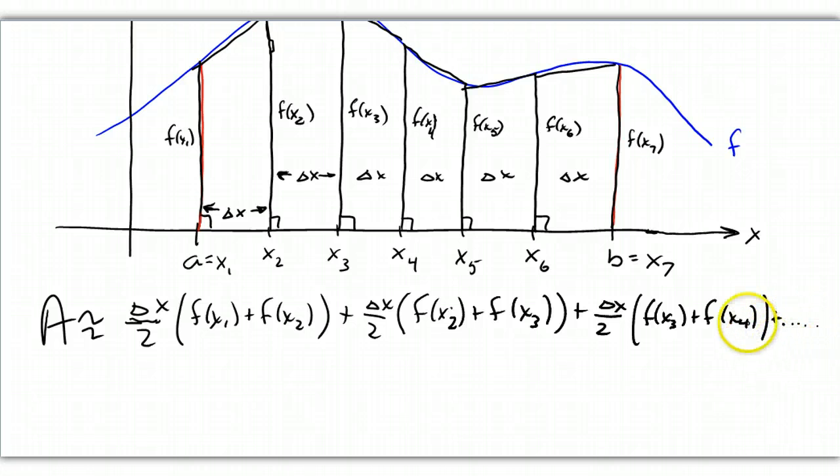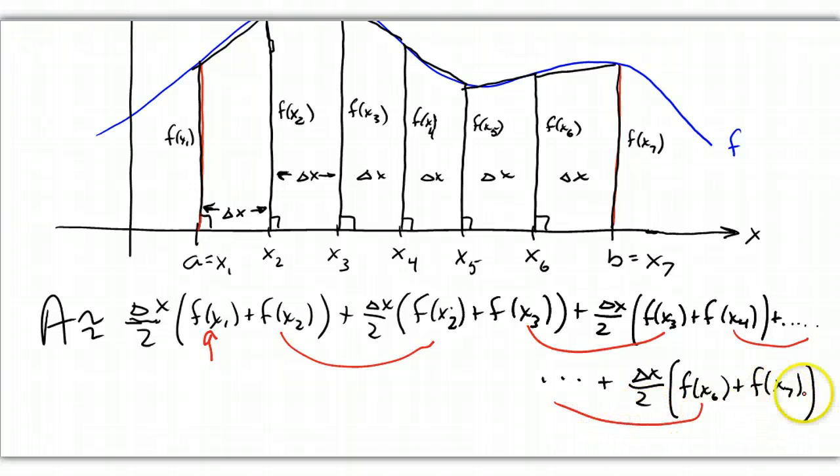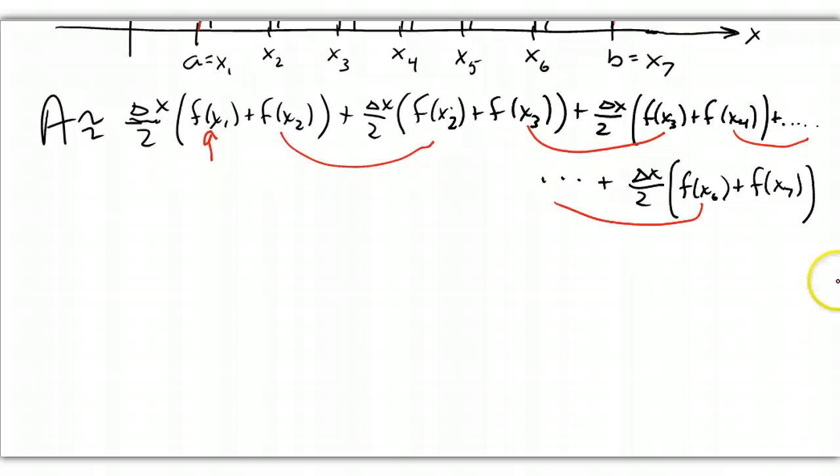I hope you all are seeing a pattern here because I don't want to write all these out. But I've got two F of X2s, I have two F of X3s, I'll have two F of X4s, and I just have one F of X1. And at the very end, my last trapezoid will be delta X over 2, and the first base is F of X6 plus F of X7. So I'll have two F of X6s because there's going to be one from the previous trapezoid and one F of X7.